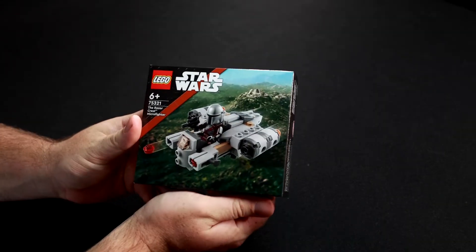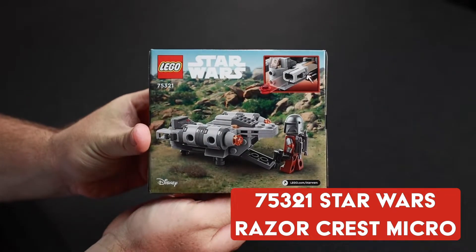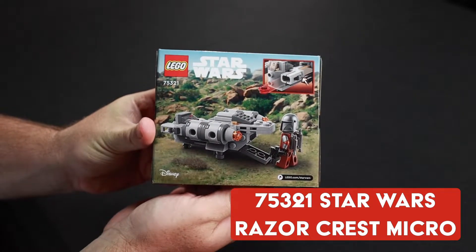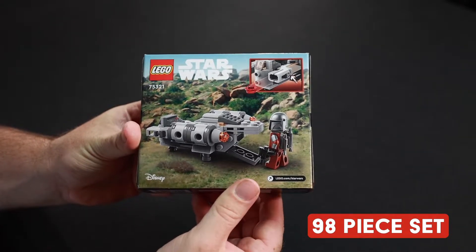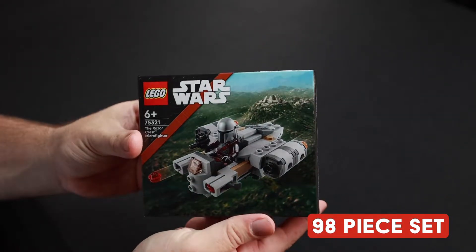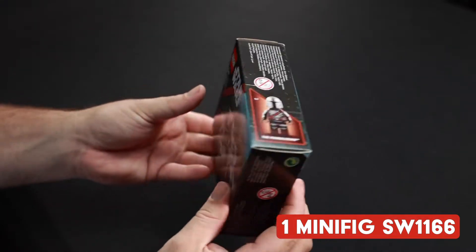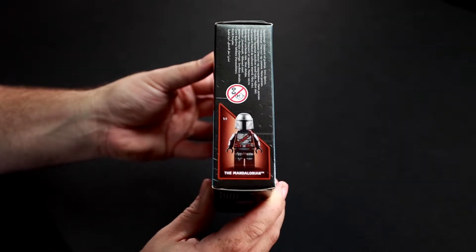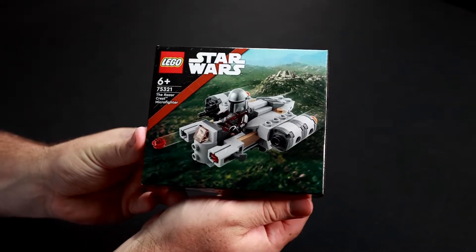G'day everyone, welcome. We are looking at the LEGO set 75321, the LEGO Star Wars Razor Crest Microfighter. It was released in 2022, has 98 pieces in it, and contains one minifig, code number SW1166, that is this Mandalorian character right here. Let's get into this Star Wars Microfighter.